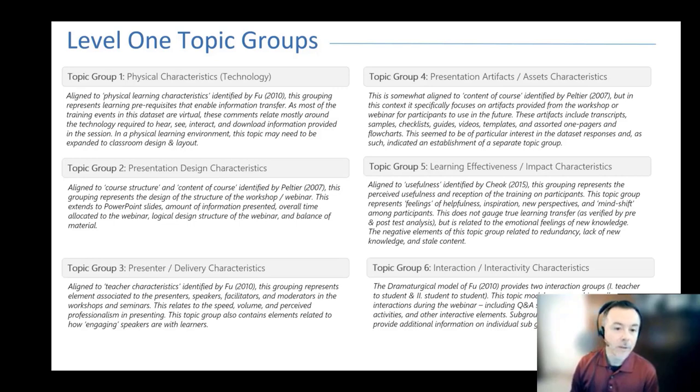The process that we go through is to identify an operational definition for each one of these topic groups—exactly what is encompassed by that topic group—and then building the word matrix iteratively to capture as many items as possible into each one of these topic groups.